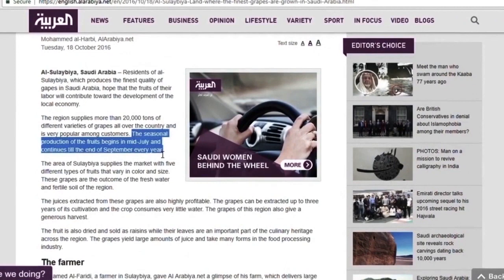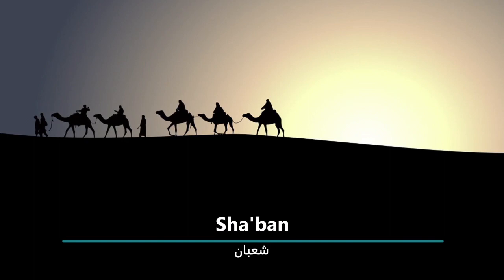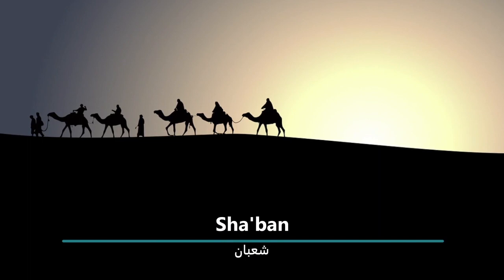Sha'ban is the following month. It means scattered. According to historical accounts, it was given this name because during this month, the Arab tribes used to scatter across the land searching for water. Since the people had been experiencing a period of drought, it makes sense that their water reserves would be depleted by this time of year, forcing them to look for more.